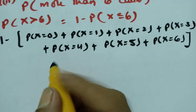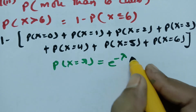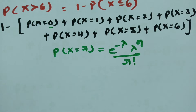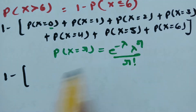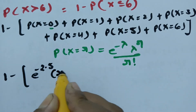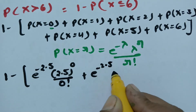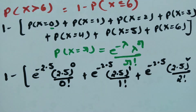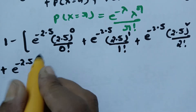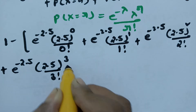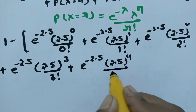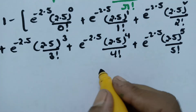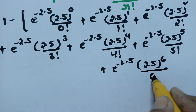According to the Poisson distribution, P(x=r) = e^(−λ) · λ^r / r!, with r = 0, 1, 2, 3, 4, 5, 6. Substituting lambda = 2.5: e^(−2.5)·2.5⁰/0! + e^(−2.5)·2.5¹/1! + e^(−2.5)·2.5²/2! + e^(−2.5)·2.5³/3! + e^(−2.5)·2.5⁴/4! + e^(−2.5)·2.5⁵/5! + e^(−2.5)·2.5⁶/6!.